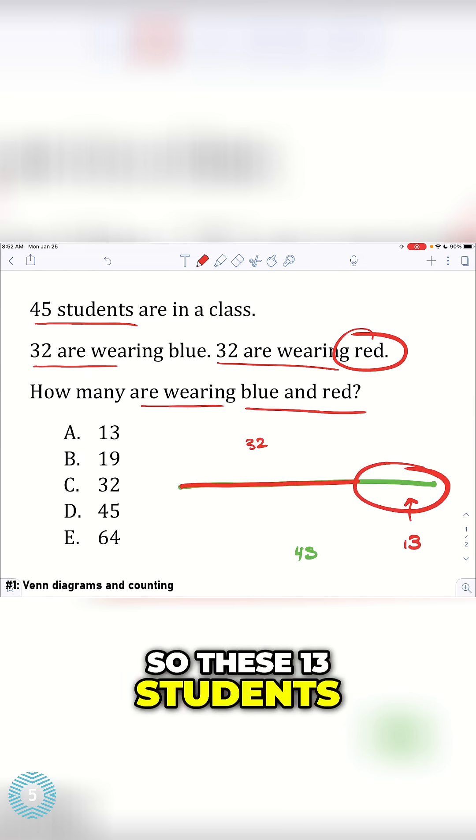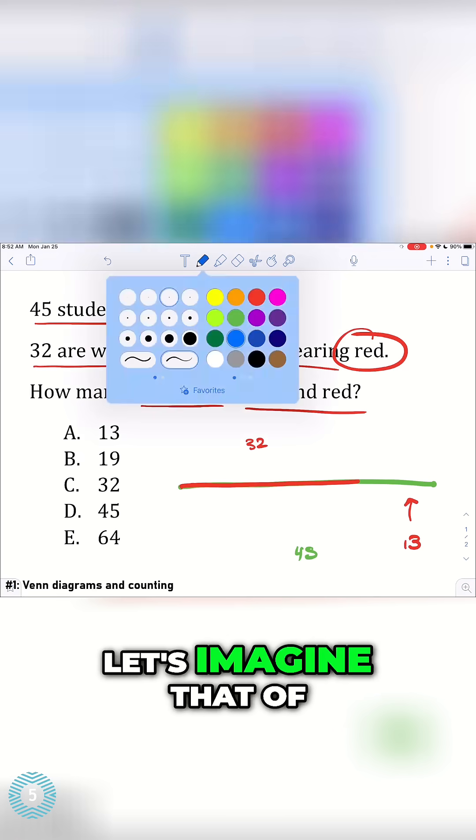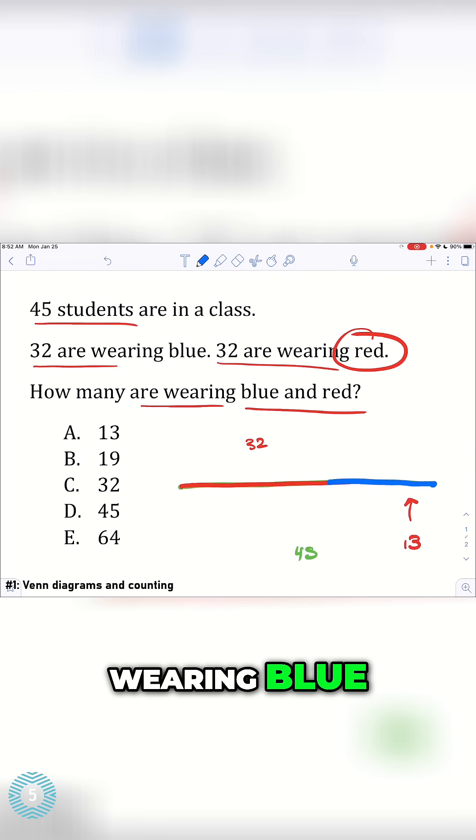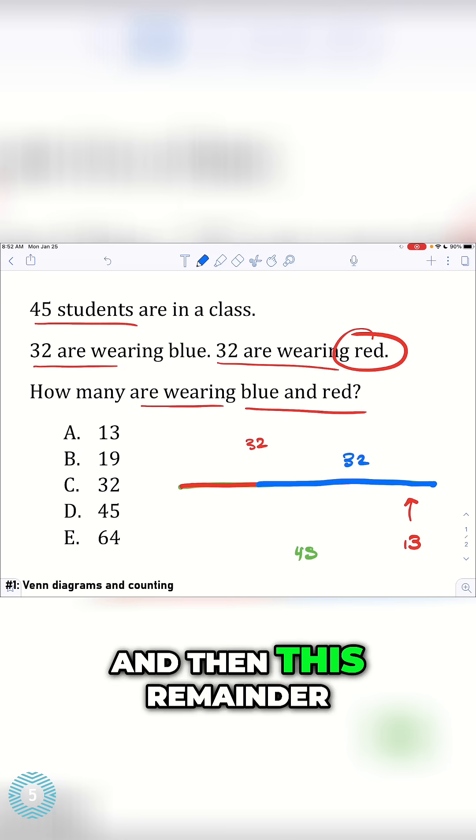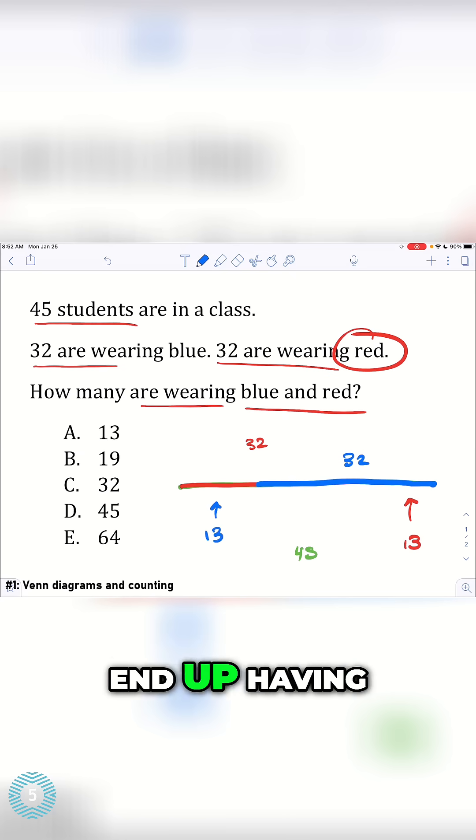So these 13 students are not wearing red. Now let's imagine that of those 13 students, all of them are wearing blue, and then 32 of the total class is wearing blue as well. And then this remainder right here is 13. So what do I end up having?